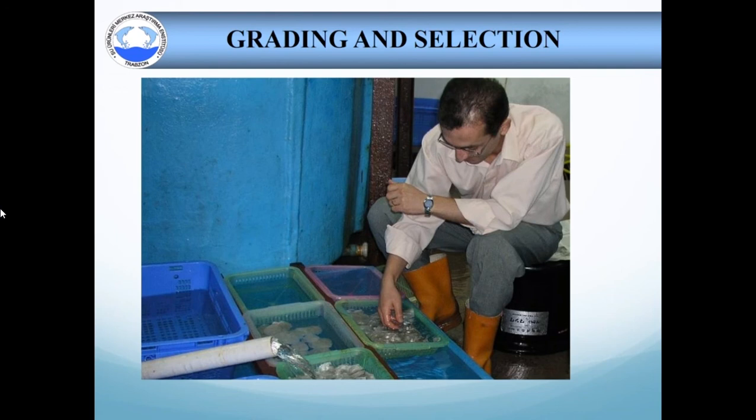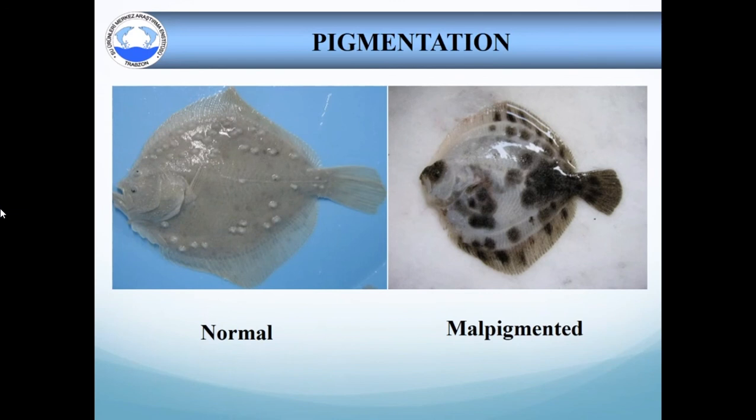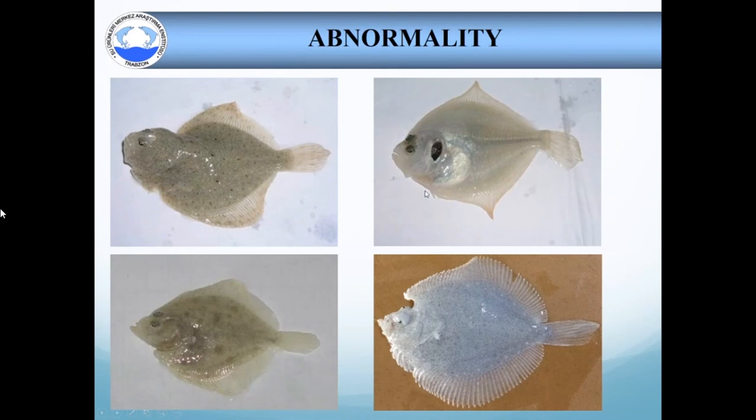On day 100, juveniles are graded by using a small basket to remove malpigmented or deformed juveniles along with size sorting, determination of the exact stock number and to use this opportunity for cleaning purpose of the tanks. This is a normal and malpigmented specimen of turbot from our facility. As you see, after the metamorphosis stage, some abnormalities can occur, such as abnormal jaw, eye migration, abnormal body and undeveloped gills and also malpigmented fish.